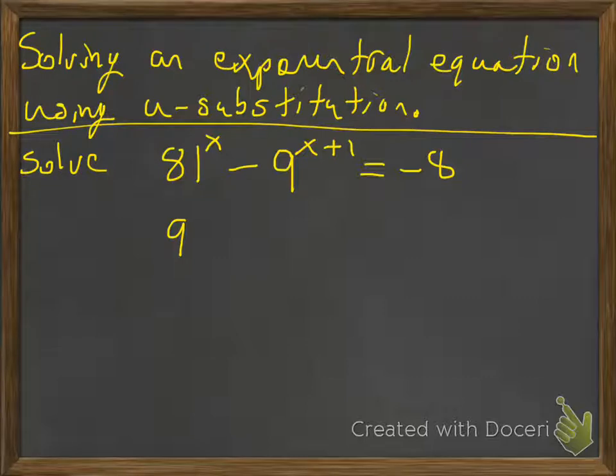But that's just if we have one term on each side. If we look at this equation here, we have 81^x minus 9^(x+1) equals negative 8. So it's got a whole bunch of stuff going on, and I have three terms, which is something that I currently can't do.